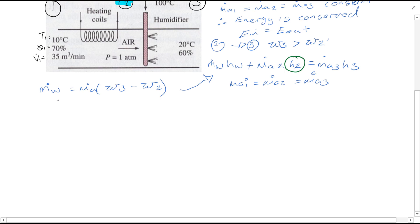Considering these values we can substitute into this equation, and you'll find we have Mw hw plus Ma H2 is equal to Ma H3.